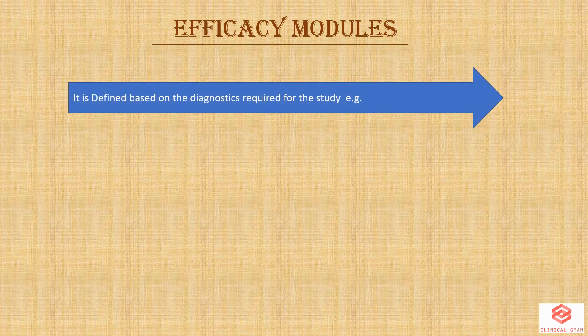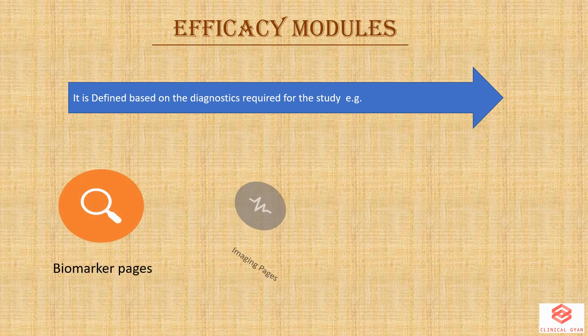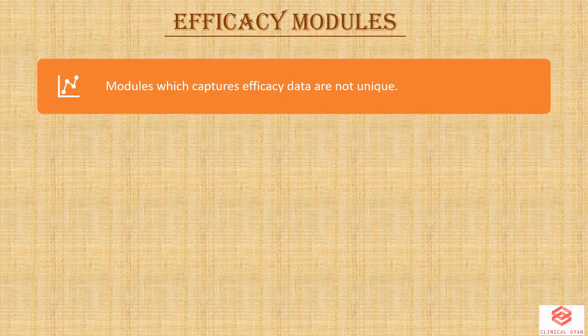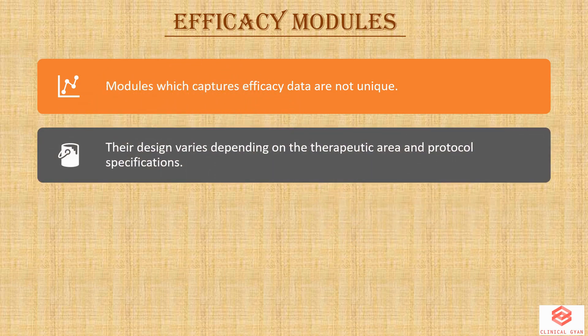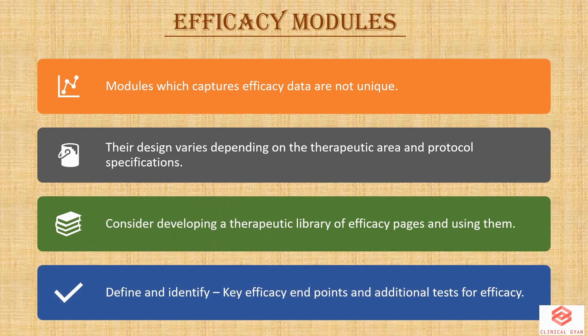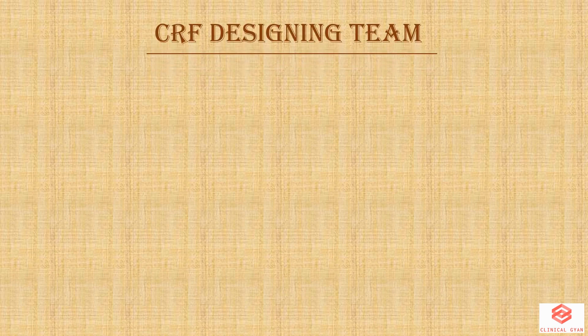The efficacy module is defined based on the diagnostics required for the study. For example, it can have biomarker pages, imaging pages, and pharmacokinetic sampling modules. Modules which capture efficacy data are not unique — their design varies depending on the therapeutic area and protocol specifications. A better option is to consider developing a therapeutic library of efficacy pages and using them to define and identify the key efficacy endpoints and additional tests for efficacy.